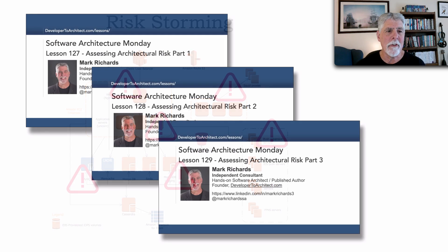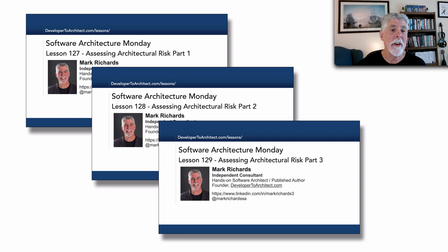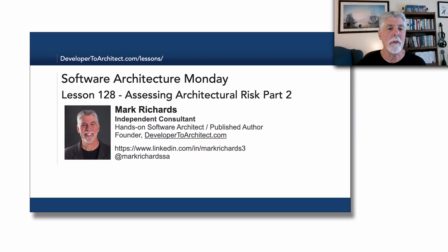Now in prior lessons, specifically lessons 127, 128, and 129, I took a look and described aspects of assessing architectural risk, and as a matter of fact this particular lesson, number 204, really pertains to lesson 128 on identifying architectural risk. What I'm going to show you is a technique called risk storming that allows us to identify risk.